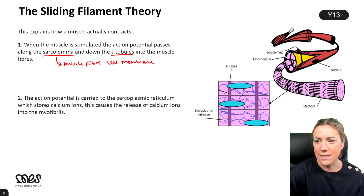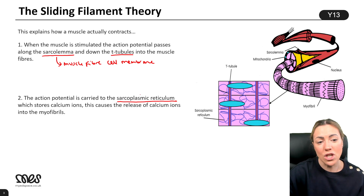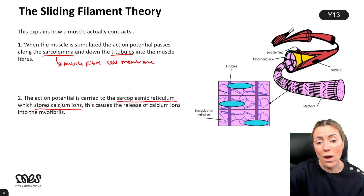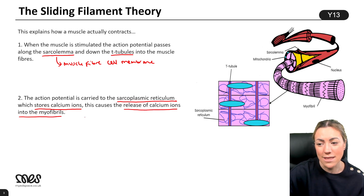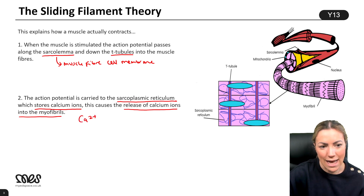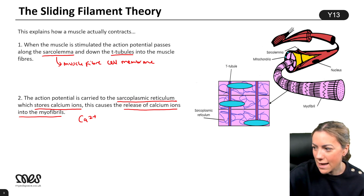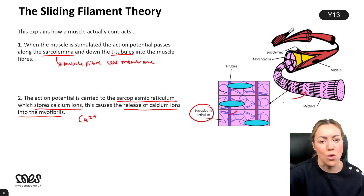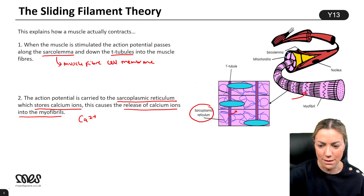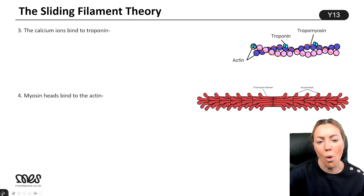The action potential travels down the T-tubules and is carried to the sarcoplasmic reticulum. The sarcoplasmic reticulum stores calcium ions, and when the action potential reaches it, it causes the release of those calcium ions (Ca2+) into the myofibrils where we find the actin and myosin filaments.